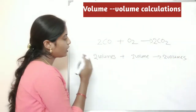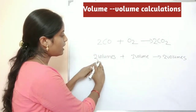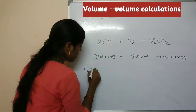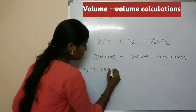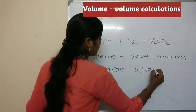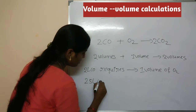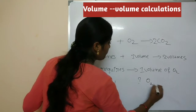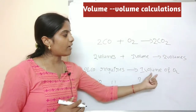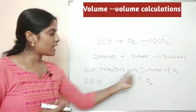So the question is: 25 liters of carbon monoxide — how much oxygen do you need? From the balanced equation, 2 volumes of carbon monoxide require 1 volume of oxygen. So 2 liters of carbon monoxide requires 1 liter of oxygen. Now, 25 liters of carbon monoxide requires 1/2 × 25.